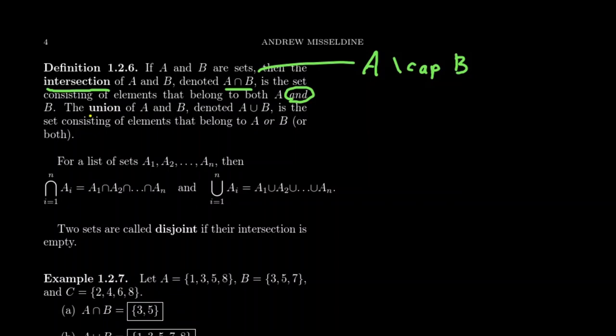The union of A and B is denoted A union B, which we write in LaTeX as A backslash cup B. The union is the set consisting of elements that belong to A or B. In logic, this is the...